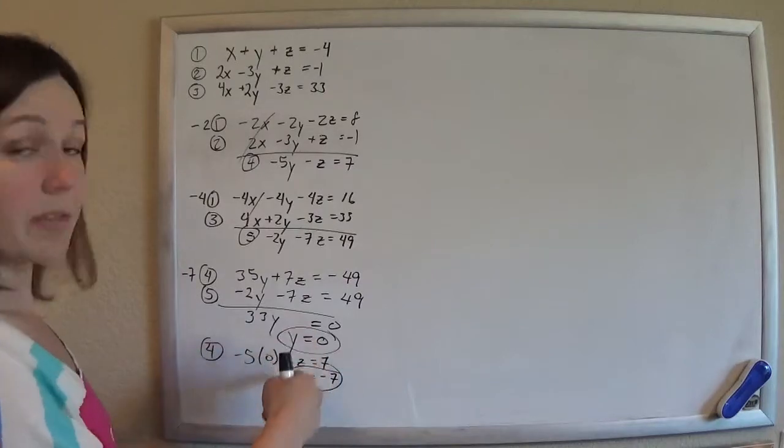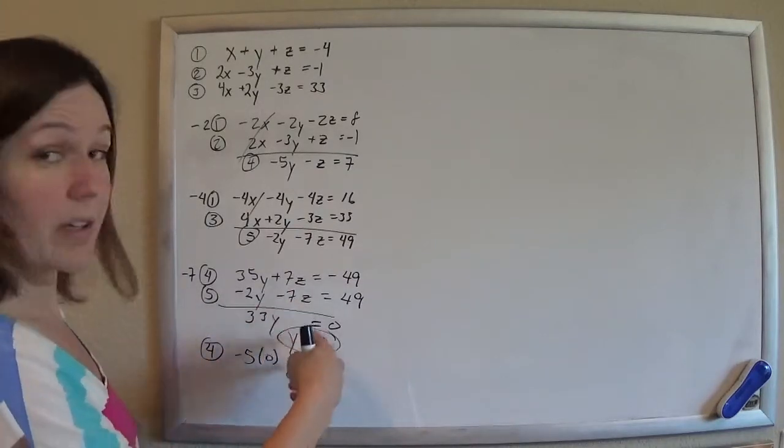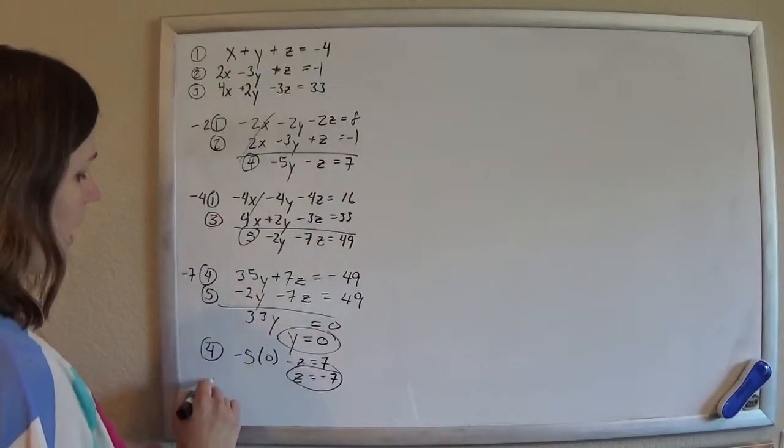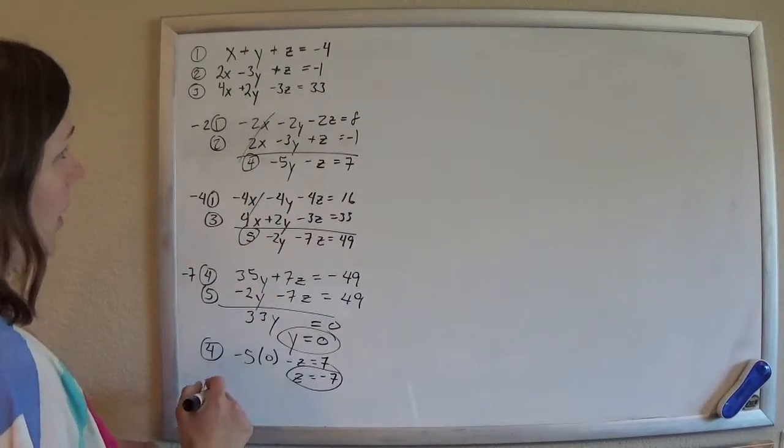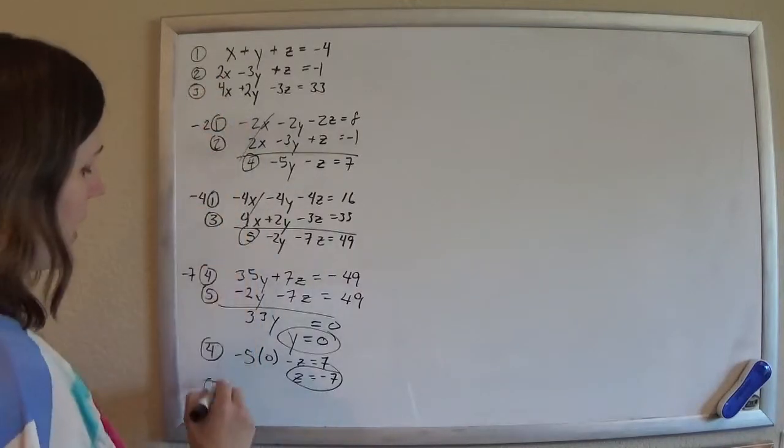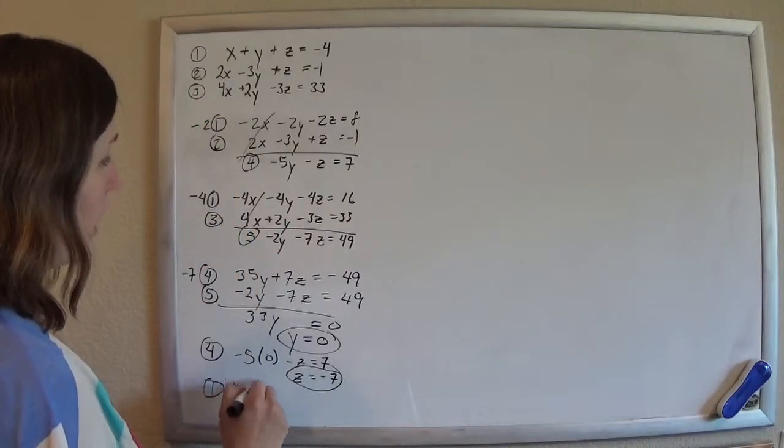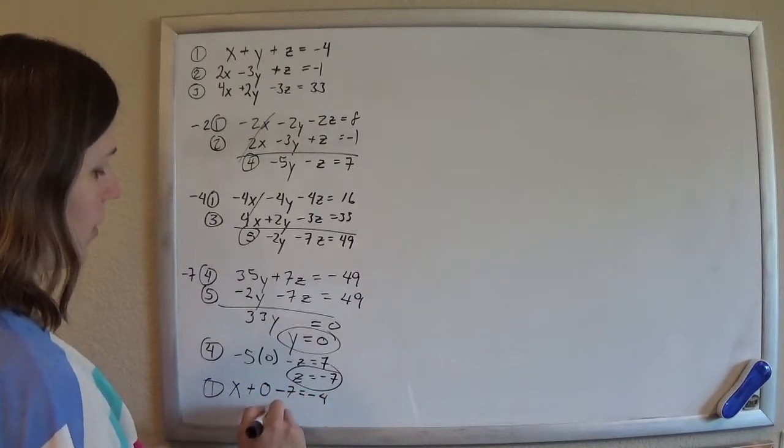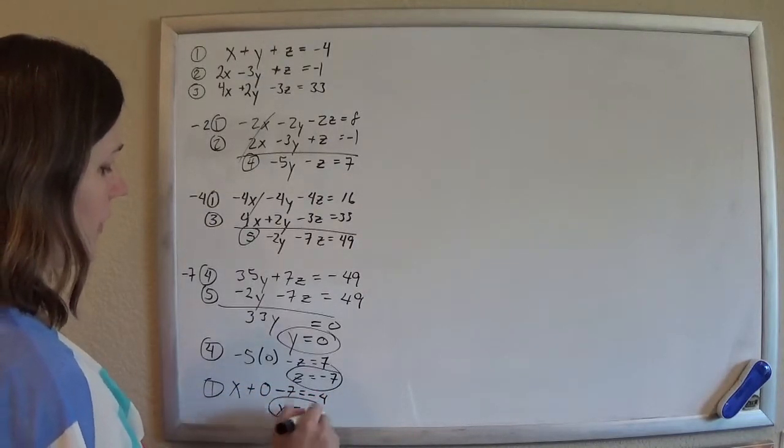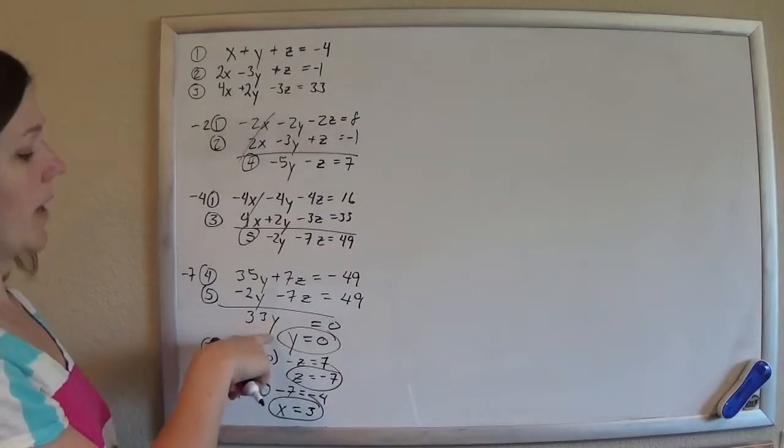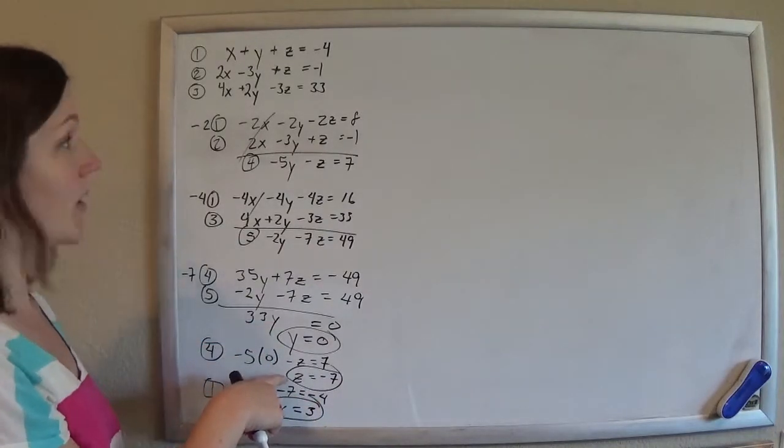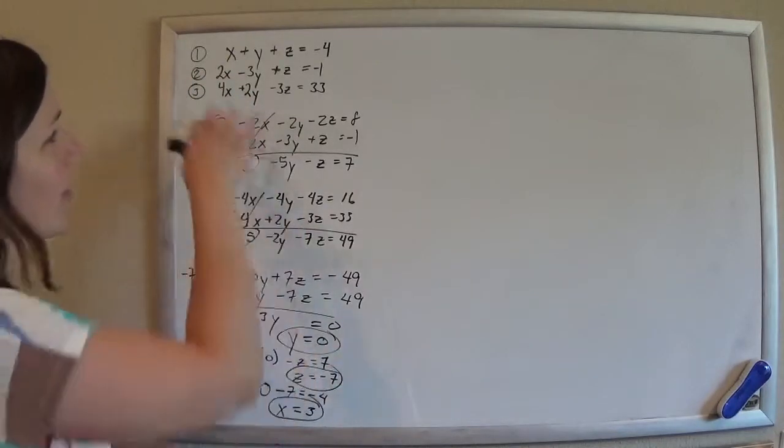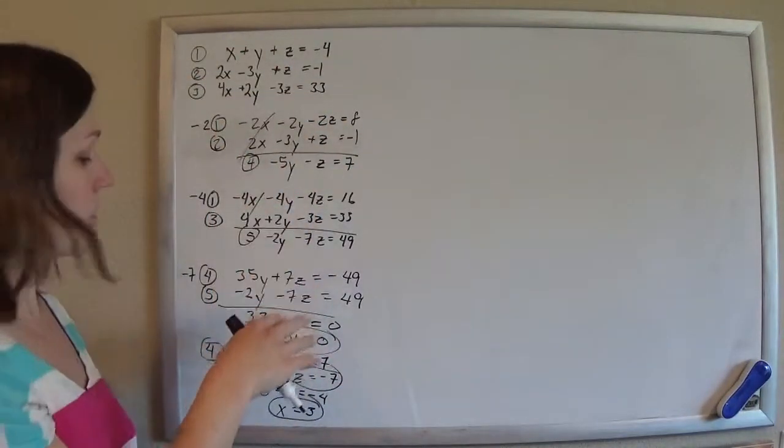And now that you have two of the unknowns you solved for, put it all the way back up into one of the original ones with three unknowns. Any one you want. I'll take number 1. And you'll solve for the last one. So x is just x, y is 0, z is negative 7. That should be negative 4. So x should be 3. So x equals 3, y equals 0, and z equals negative 7 are the numbers that will make all three of those equations true.